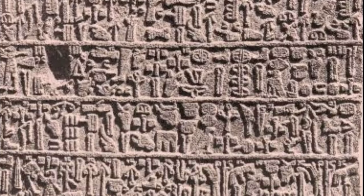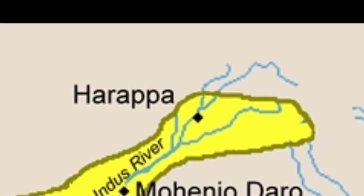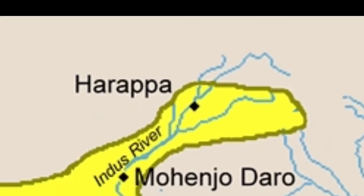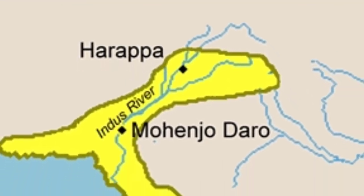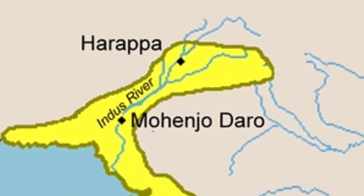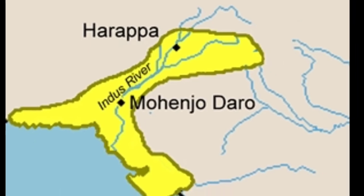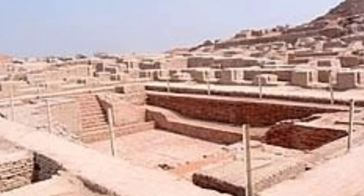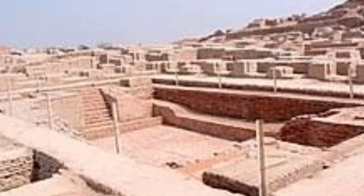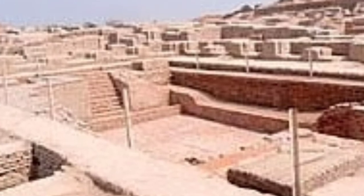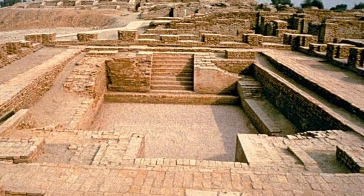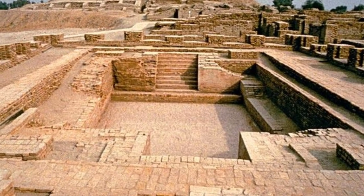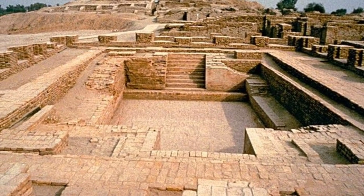The Indus Civilization was well known for its two largest cities, named Harappa and Mohenjo-Daro. Both were centers of trade and had a very advanced city organization, including carefully organized houses, a sewer system, major and minor streets, as well as warehouses used for storing food and merchandise, and large city walls.